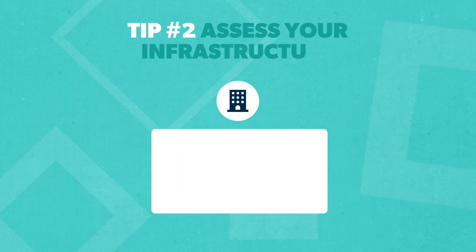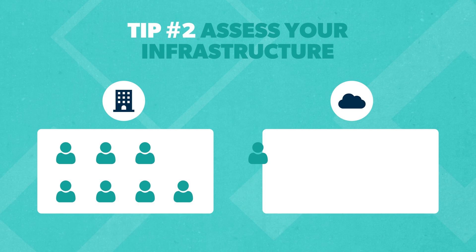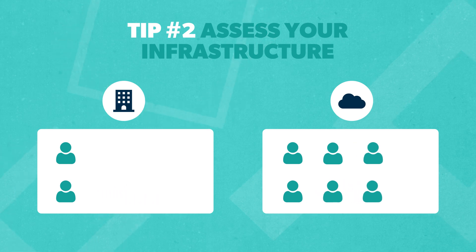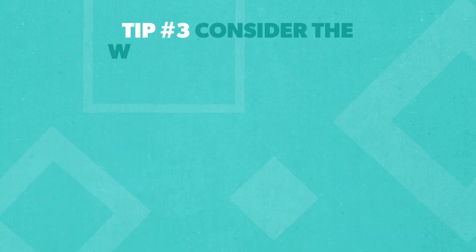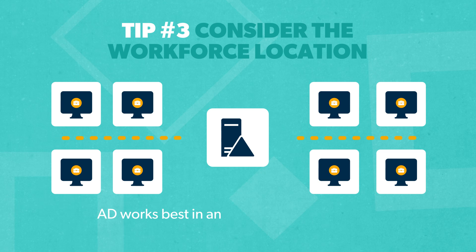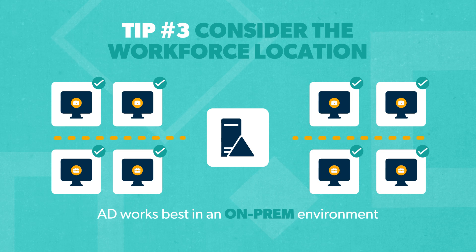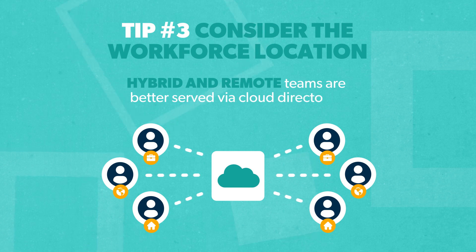Assess the extent to which your current infrastructure is on-prem, then consider whether AD usage supports future goals. For example, if the goal is to migrate fully or partially to the cloud, begin weaning the infrastructure off Active Directory sooner rather than later. Also consider the workforce location — AD works best in an on-prem environment. If your organization's workforce is primarily on-site, AD shouldn't present much of a problem, but hybrid and remote teams are better served via cloud directories.